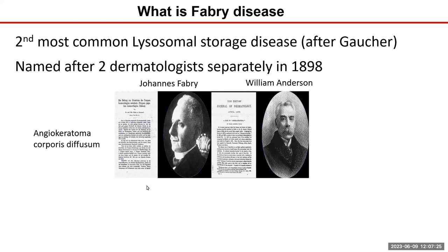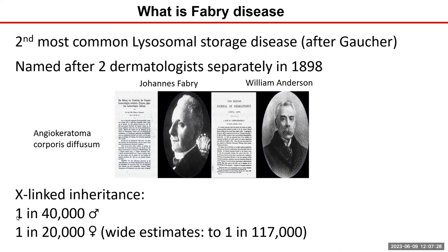Fabry disease is a rare disease. It occurs about one in 40,000 males. The prevalence is quite variable because the more genetic testing we do, the more we find it. In terms of clinically manifest disease, it's about one in 40,000 males, maybe one in 20,000 females. Some literature reports as high as one in 200,000, and newer literature from countries doing routine genetic screening suggests it may be as high as one in 2,000 in neonates.